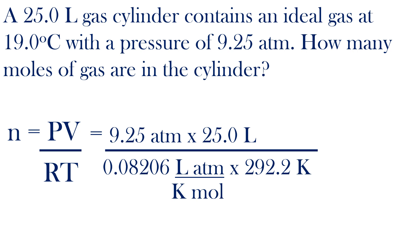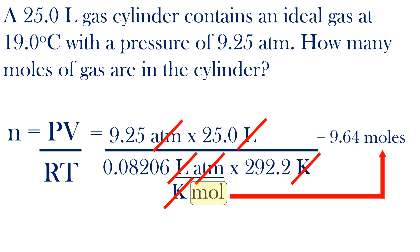Checking the units: atmospheres cancel, volume cancels, and temperature cancels. Moles in the denominator of a denominator will go to the numerator, and 9.64 moles of gas are present in the cylinder.